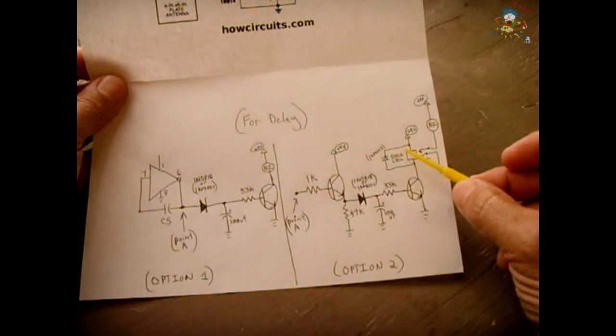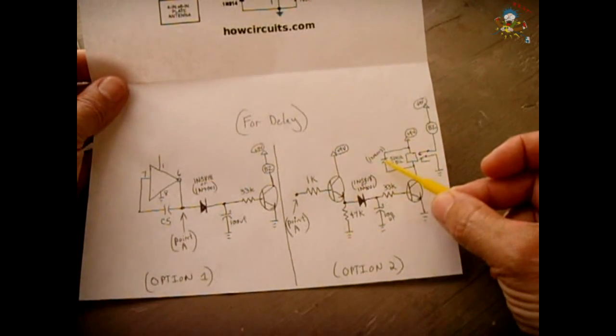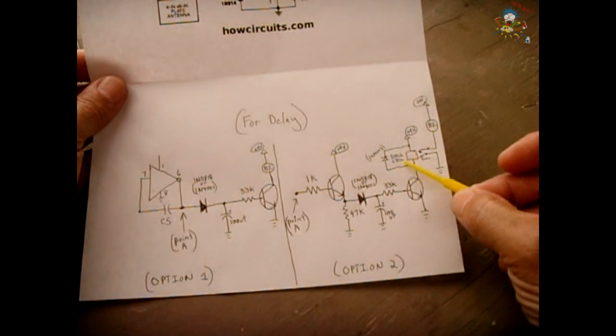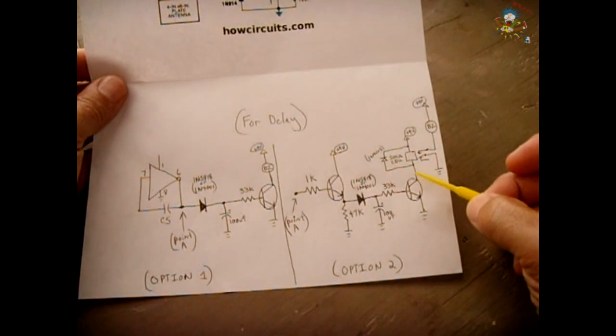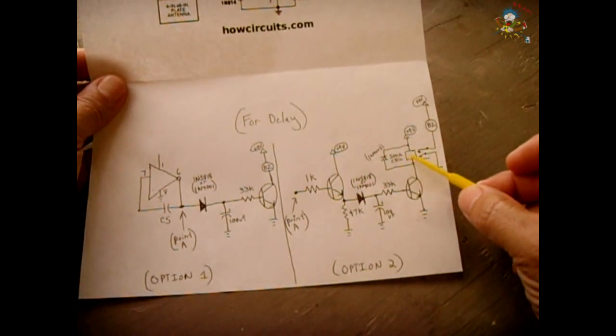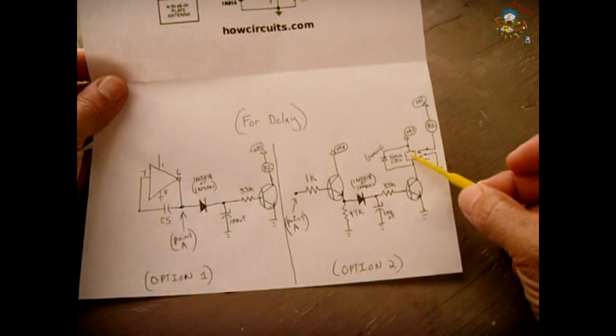In parallel, across the relay coil, you have your 1N4003 diode. It protects the transistor against back EMF from the coil of the reed relay.